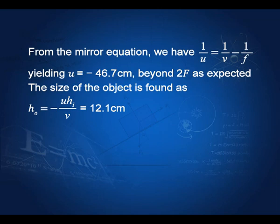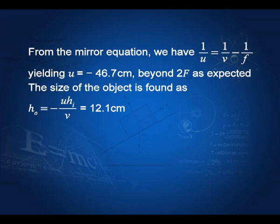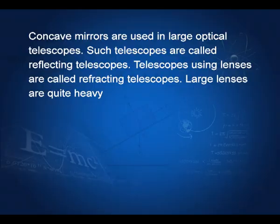Substituting the values into the mirror equation yields u = 46.7 cm. We now have both u and v. The magnification is v/u = 46.7 / 12.4, which is roughly 4. So the object size is 4 times 3.2, giving approximately 12.1 centimeters. This will be a virtual image, and therefore the magnification is positive.